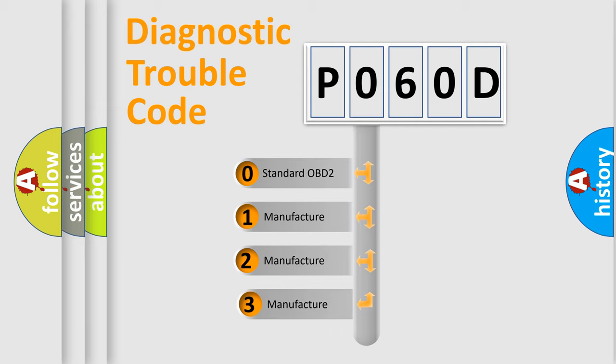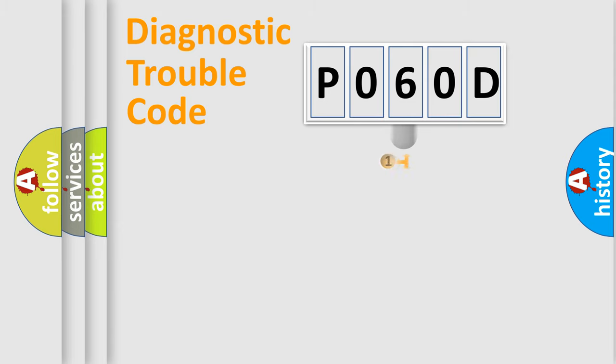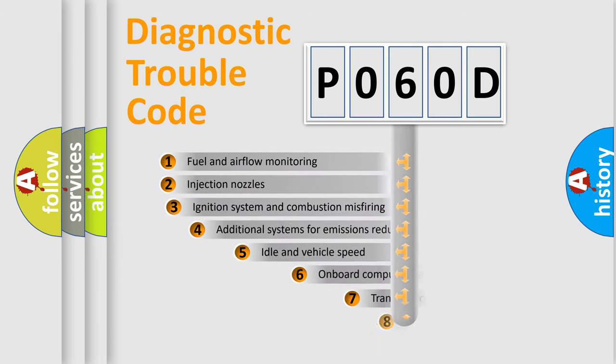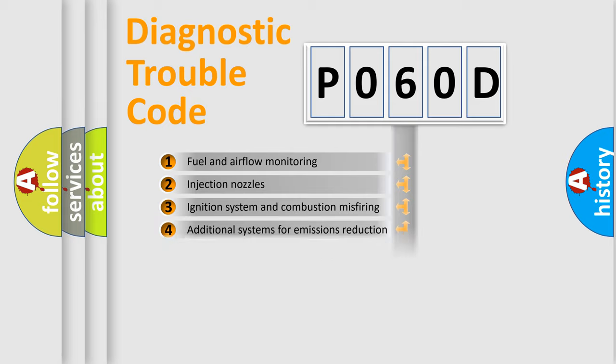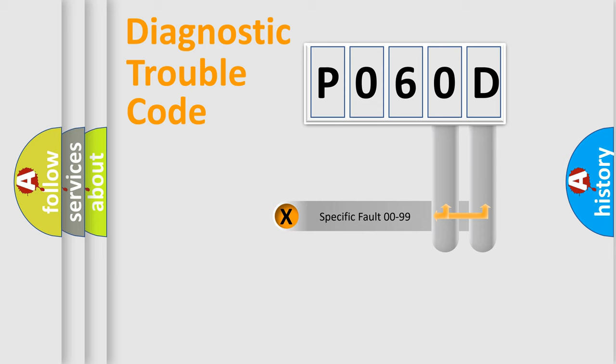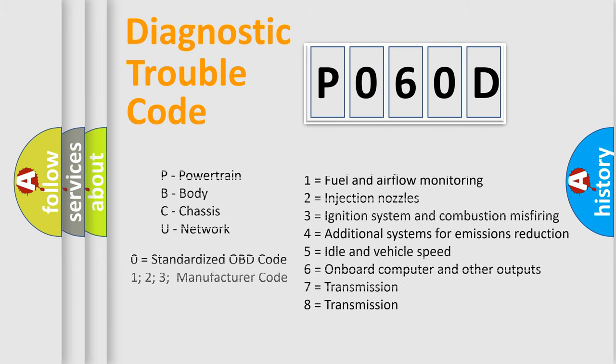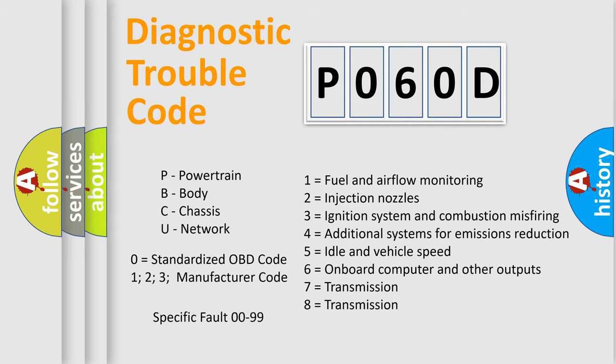If the second character is expressed as zero, it is a standardized error. In the case of numbers 1, 2, 3, it is a manufacturer-specific error. The third character specifies a subset of errors. The distribution shown is valid only for the standardized DTC code. Only the last two characters define the specific fault of the group. Let's not forget that such a division is valid only if the second character code is expressed by the number zero.